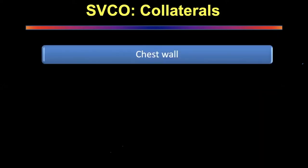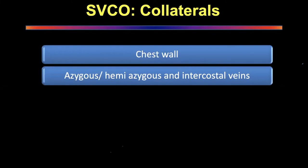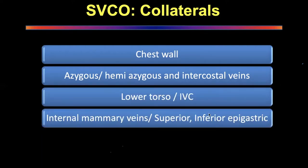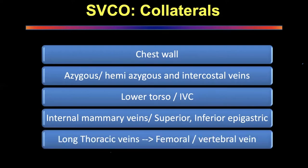The collaterals that open up on the chest wall: the azygous, hemi-azygous, and intercostal veins are the main areas taking back pressure off the SVC. The lower torso via the IVC may also open up — internal mammary veins and superior and inferior epigastric veins all form collateralization. If back pressure is very high it can go all the way down to the femoral area, and even worse — into the vertebral area causing spinal ischemia.